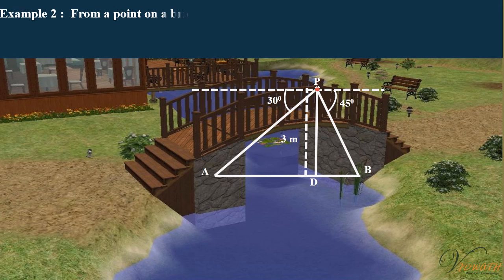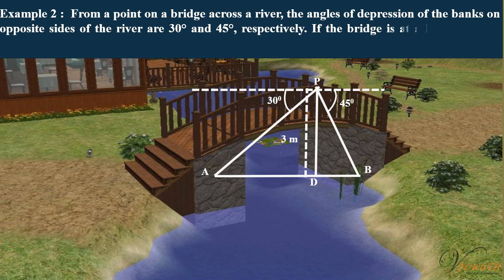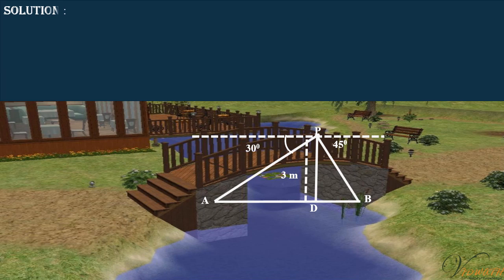Example 2: From a point on a bridge across a river, the angles of depression of the banks on opposite sides of the river are 30 degrees and 45 degrees respectively. If the bridge is at a height of 3 meters from the banks, find the width of the river.